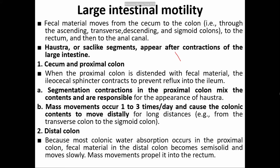Large intestinal motility: two types of motility occur in the large intestine. One is haustra or segmentation contraction, and the second is mass movement. In the small intestine, three types of motility occur: segmentation contraction, peristaltic contraction, and migrating motor complex. In the large intestine, two types occur: haustra and mass movement.